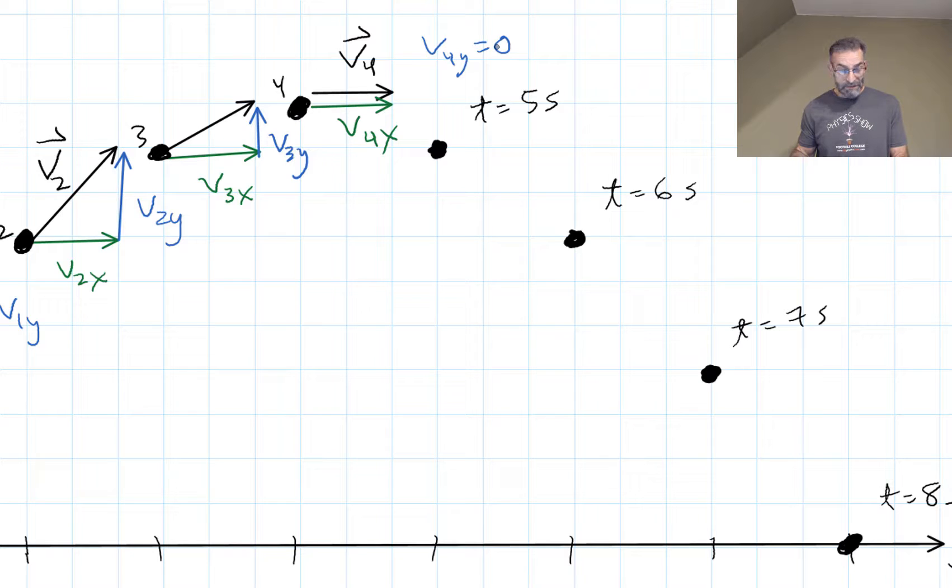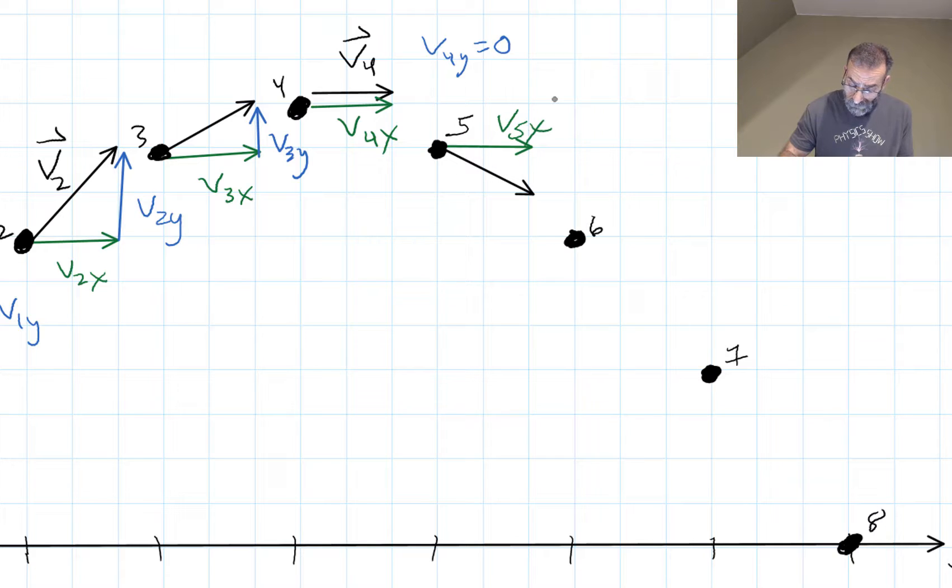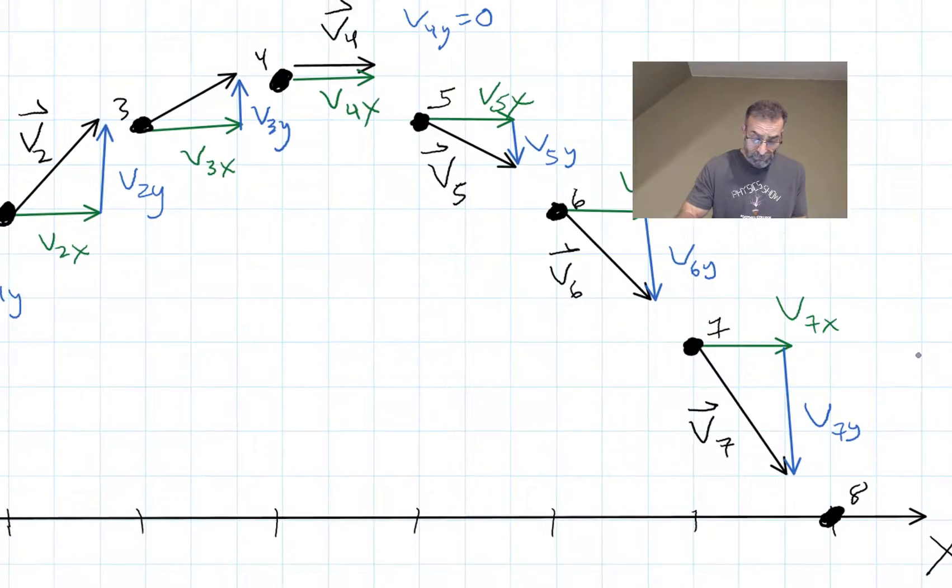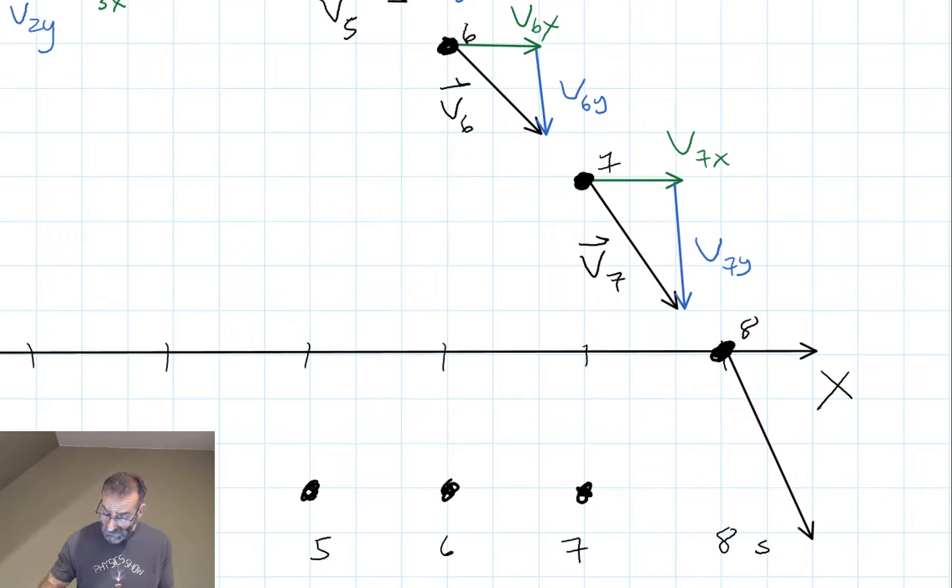And then it starts to come down and we could draw in the components of each instantaneous velocity vector on the way down, just as we did on the way up.